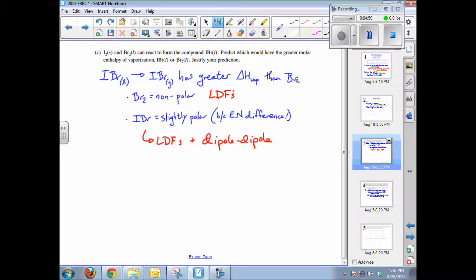So there are two different, I should say the magnitude of the attractive forces between IBr molecules is greater than between bromine diatomic molecules. And therefore, the delta H of vaporization for IBr is greater, and the justification is as I've just stated, because there are greater dipole-dipole attractive forces than just LDFs present in bromine.